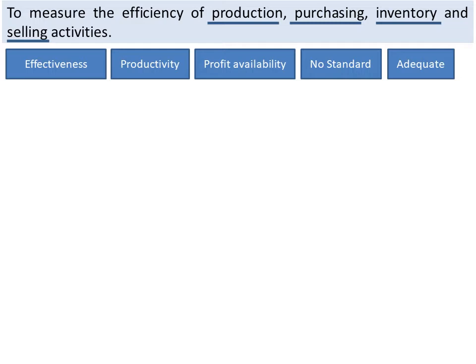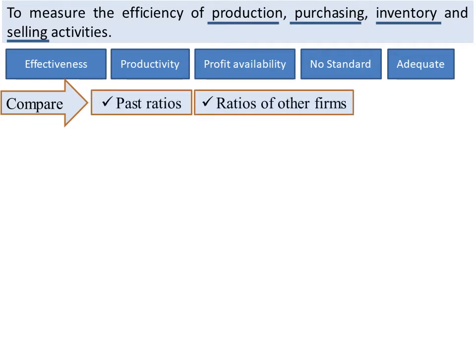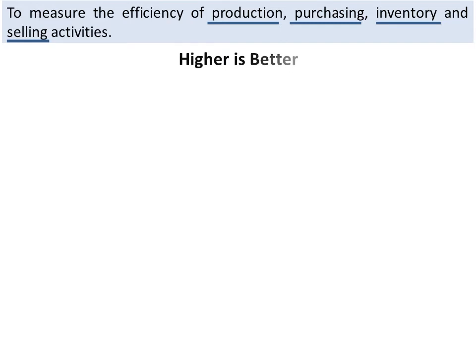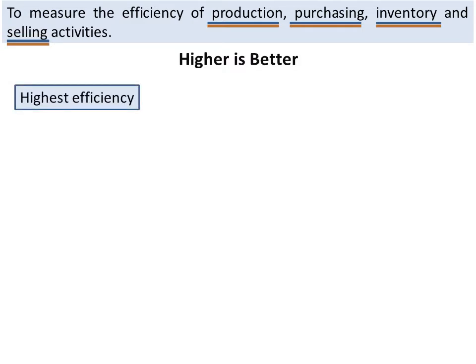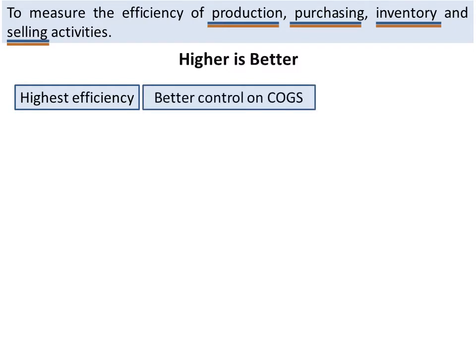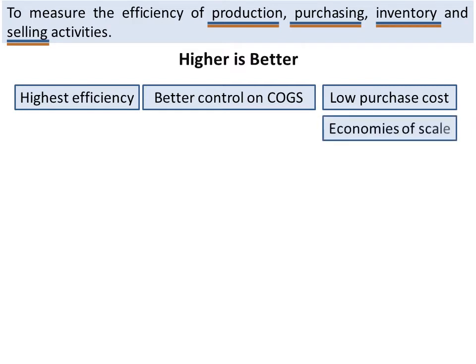To decide whether a firm's ratio is satisfactory or not, it should be compared with its past ratios, with the ratios of other firms in the same industry, or with industry norms. Generally, a higher ratio is considered better. Higher ratio indicates that the firm is managing its purchases, production, inventory, and sales with the highest possible efficiency. It displays that the firm's cost of goods sold is in control. It may be because the firm has purchased goods at low prices or has taken advantage of economies of scale.